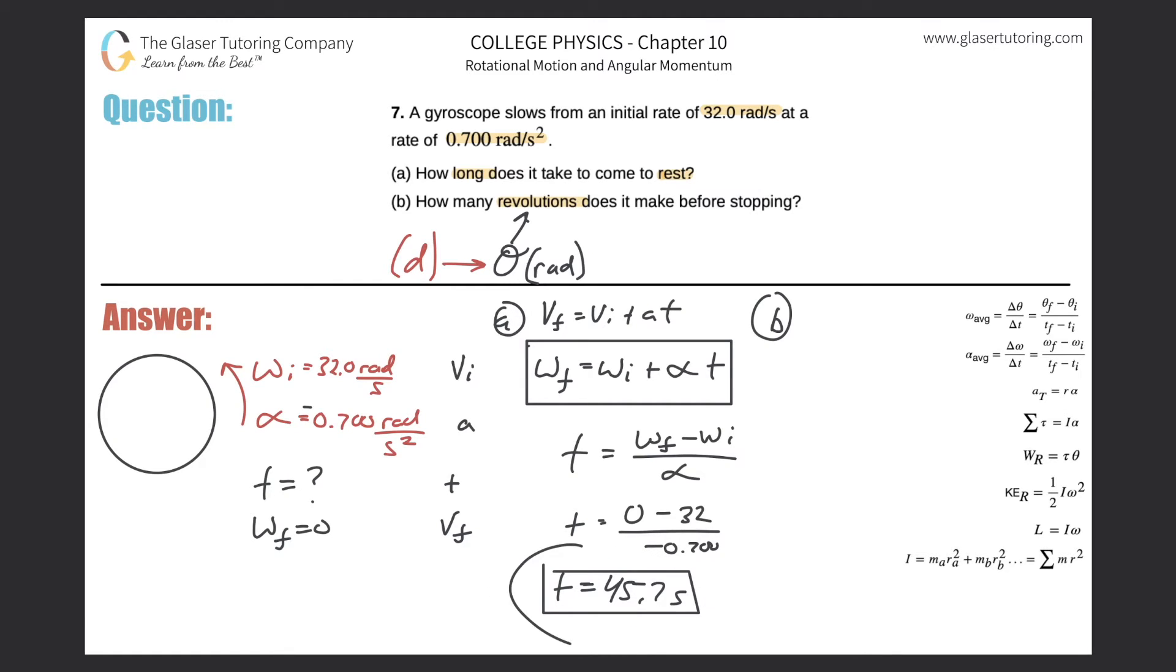Because maybe I made a mistake here and I don't want the error to propagate into my next part. So I'm thinking to myself, all right, well I'm being asked to find a distance. They told me the initial velocity, they also told me the acceleration, and I also know the final velocity. So what equation of linear kinematics relates those four variables together?